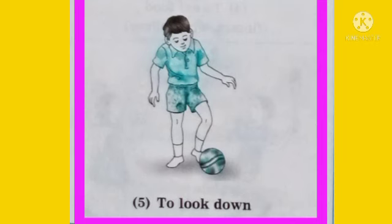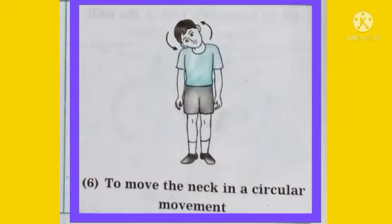In the fifth picture, the boy is going to kick the ball, so he looks down. The neck position here is down. In the sixth picture, the boy is moving his neck in a circular movement — you can move your head slowly in a round position.